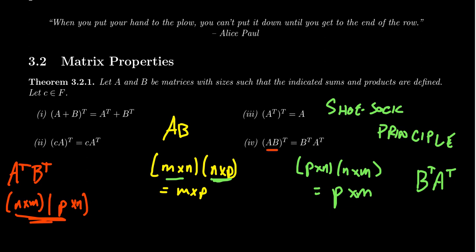So you must flip things around for the matrix product to make sense — the shoe-sock principle. This is also alluding to something we'll cover in the next video: matrix multiplication is not a commutative operation. A times B does not equal B times A in general, and even if A times B is well-defined, B times A might not exist.